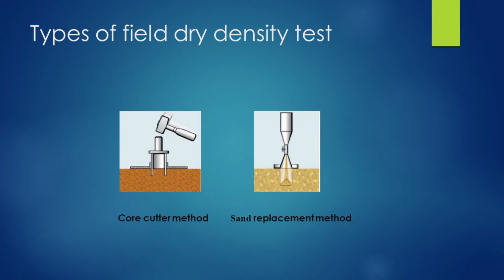We have to compare the field dry density to the maximum dry density value from the lab. We have to follow the main method. The core cutting method is one approach, and the sand replacement method is another.